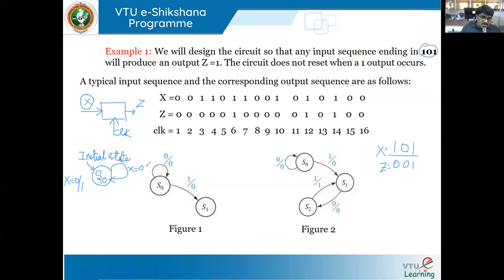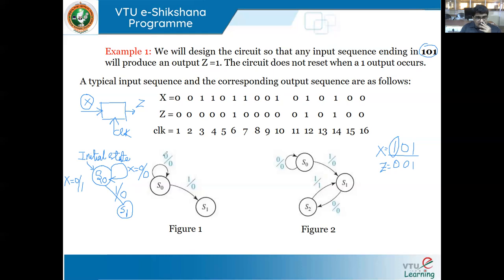I know my pattern is one-zero-one. If I get x equal to zero, I am least worried — I let output be zero and remain in the same state. Instead, if I get one, I am interested in going to the next state, which I call S1. If the input is one, I move to the next state S1 with output still being zero, because output goes to one only after detecting one-zero-one in sequence.